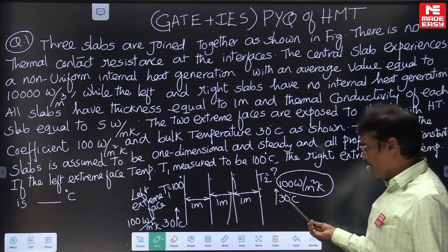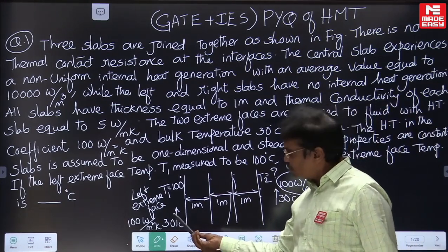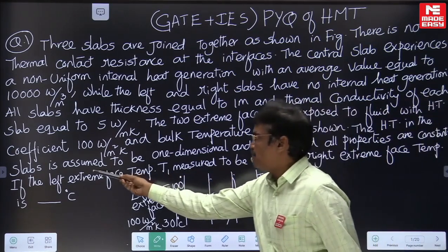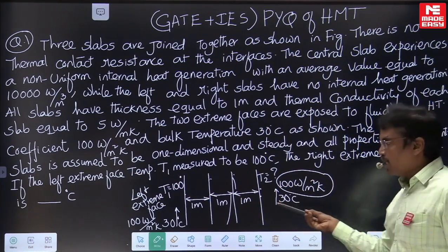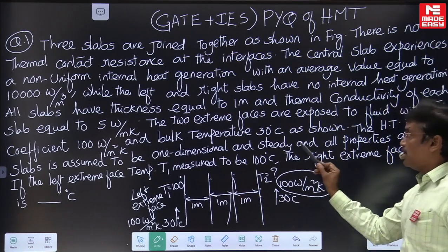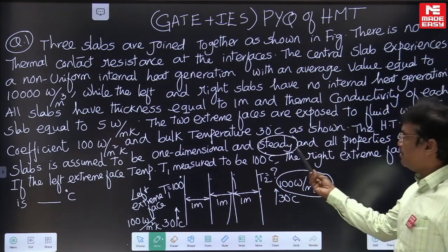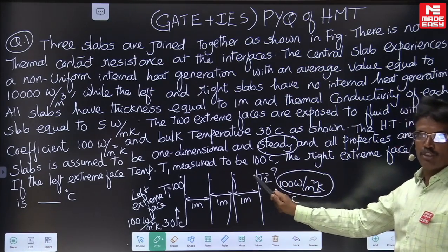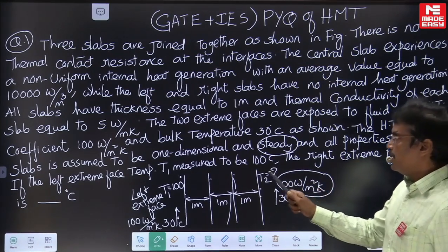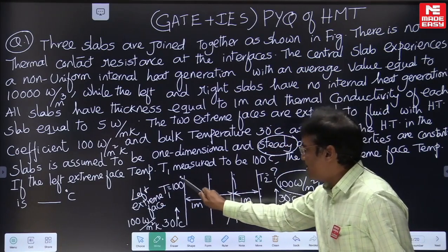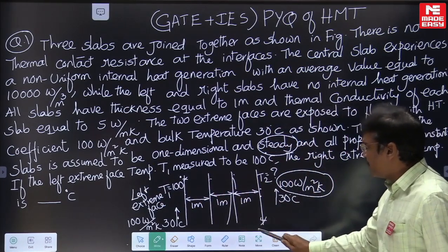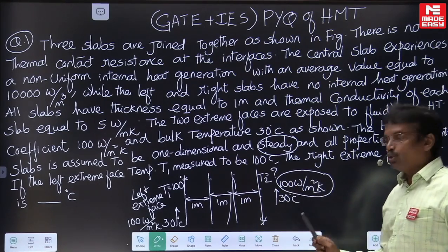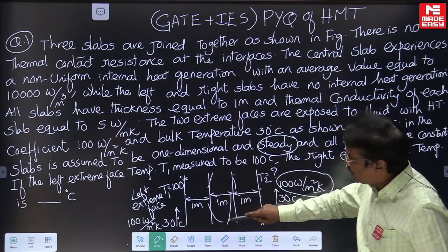The fluid temperatures on both the right side and left side are 30 degrees Celsius, and the convective heat transfer coefficient is 100 Watt per meter square Kelvin. Heat transfer in the slabs is assumed to be one-dimensional and steady. Steady state means the temperature at a particular location must not change with respect to time and all properties are constant. If the left extreme face temperature is 100 degrees Celsius, what is the right side extreme face temperature? This is a one-dimensional steady state conduction problem with heat generation only in the central slab.